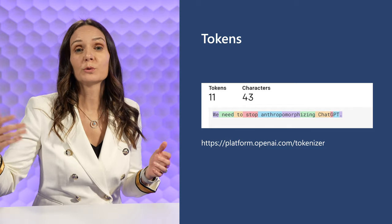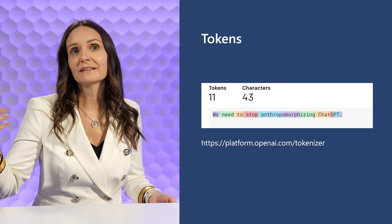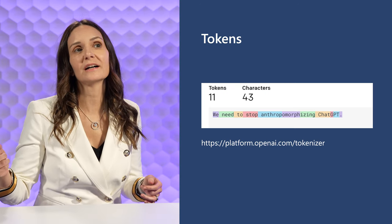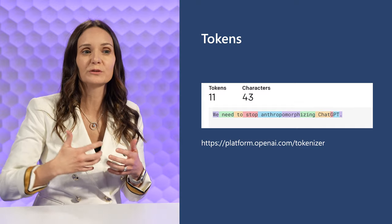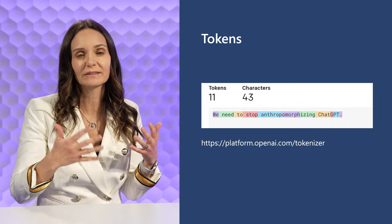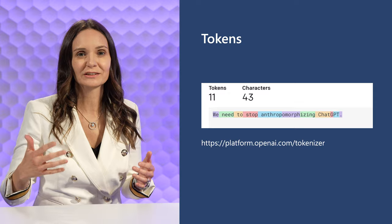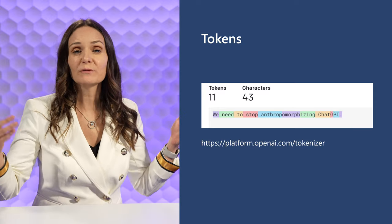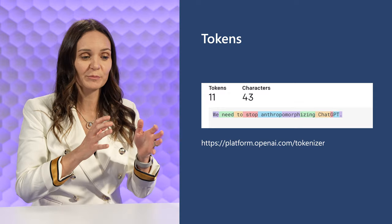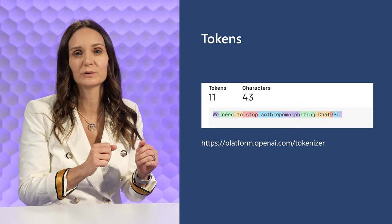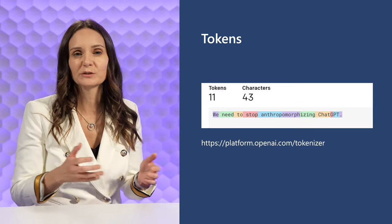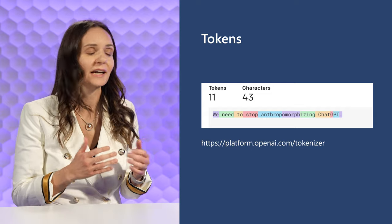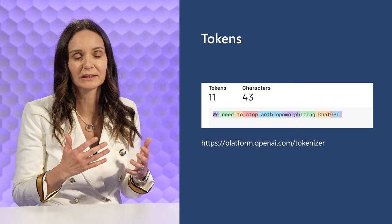On the other extreme, each word could be a token, which would be good because you'd use fewer tokens for the same amount of text. But these models need to keep a list of all tokens they consider, and it's hard to maintain a list of every word that exists. For that reason, OpenAI settled on something in the middle — each token is a few letters — and most tokenizers from other companies do something similar, even if they differ in implementation details.